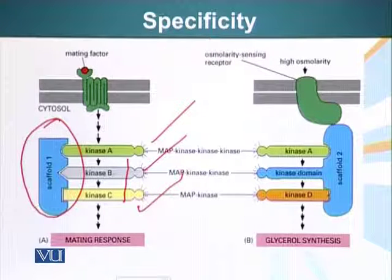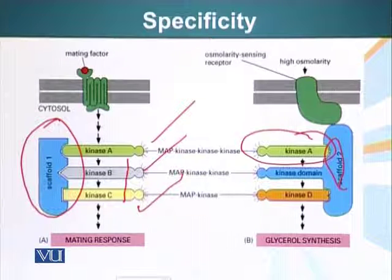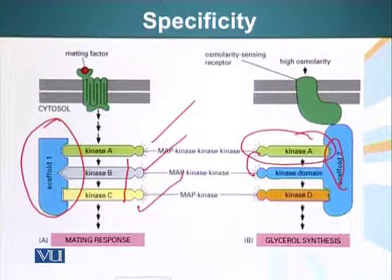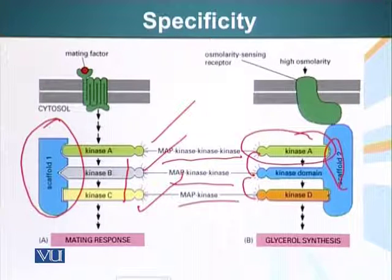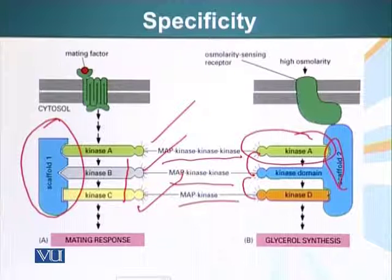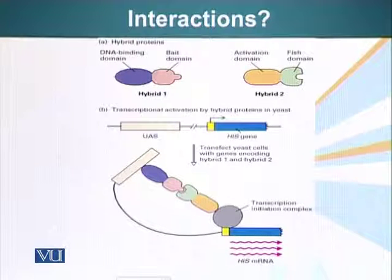In another scenario, protein kinase A is activated as well, but it is not activating protein kinase B because this cell does not have scaffold one. It has scaffold two, and scaffold two does not permit binding of kinase B. So in this case the signal from kinase A is being transmitted to the kinase domain of the scaffold protein, which is transmitting it to kinase D. So again, MAP kinase kinase kinase, RAF, or MEK — these are generic names. There are several different versions of these proteins in different cells. This is how cells can restrict or focus the incoming signal to a specific target using scaffolds.